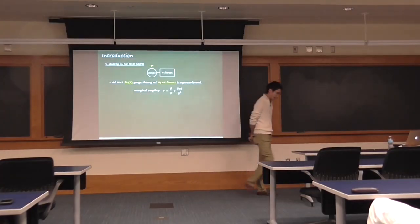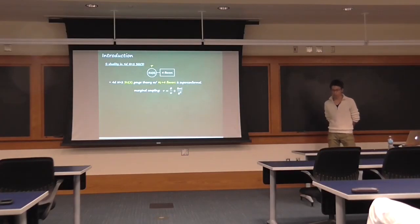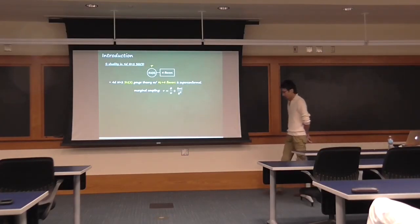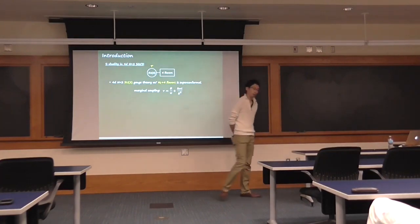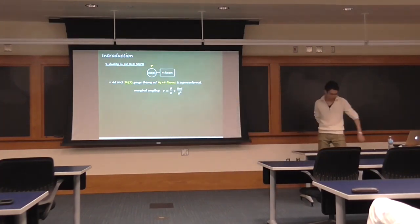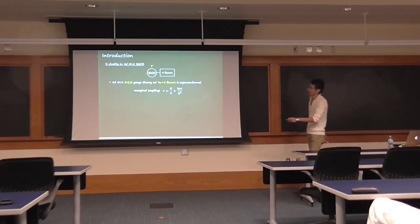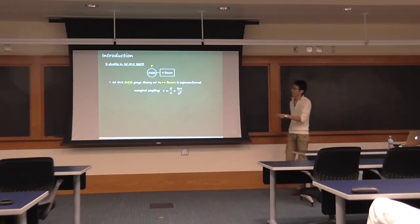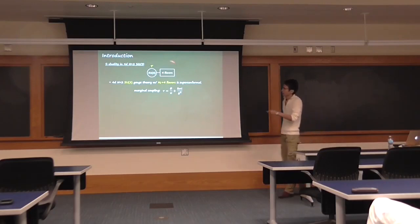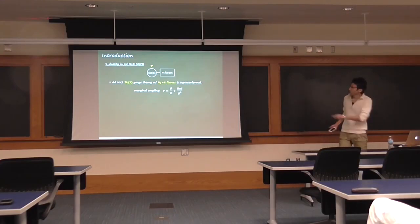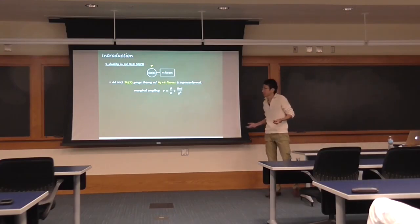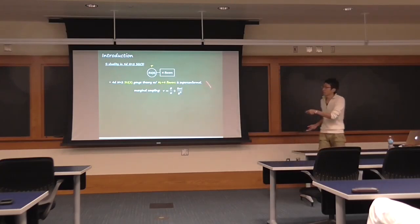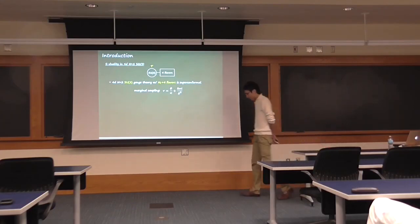My talk today contains two different ingredients. The first one is S-duality. S-duality is a symmetry between the strong coupling and the weak coupling of the theory. For example, let's consider SU(2) N=2 gauge theory with 4 flavors. Because the number of flavors is twice the number of colors, you can calculate the beta function coefficient of the gauge coupling, and you can see that the beta function is vanishing. So in that sense, this gauge coupling is exactly marginal, and this theory is conformal.